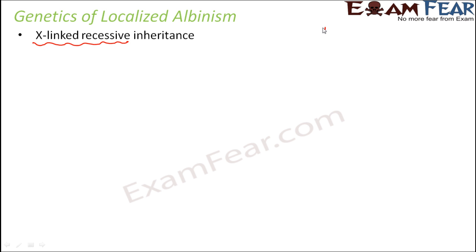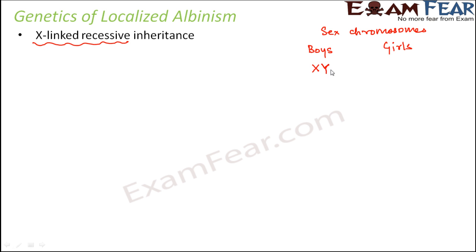Now let us look at the sex chromosomes. In the previous slide we spoke about the autosomes. When you talk about the sex chromosomes, they are very different in boys and girls — boys have XY and girls have XX. What is common in these two is the X chromosome. When you have a defective gene on this X chromosome, that defective gene inherits localized albinism to the next generation.